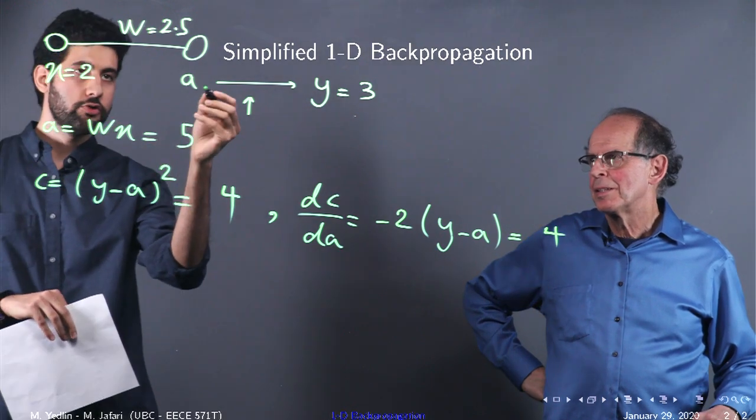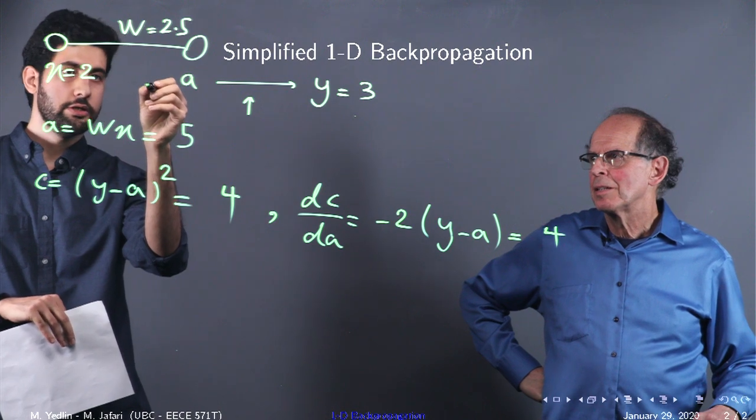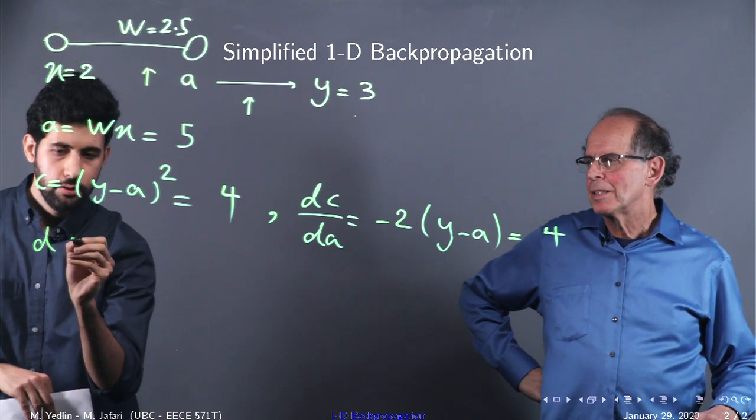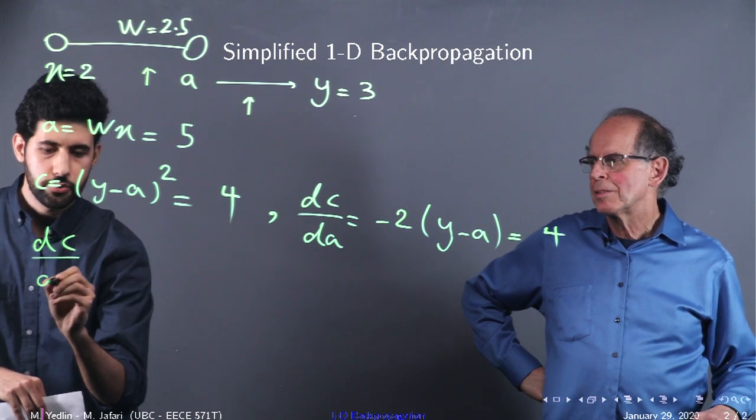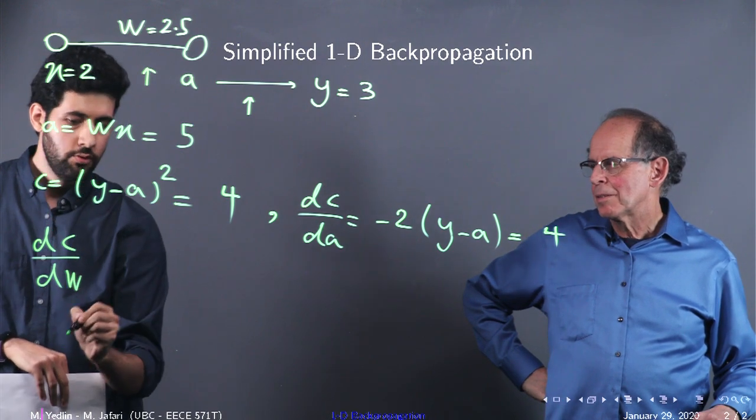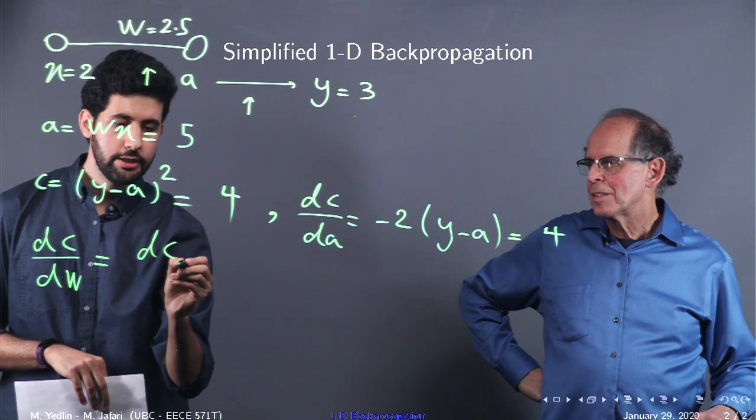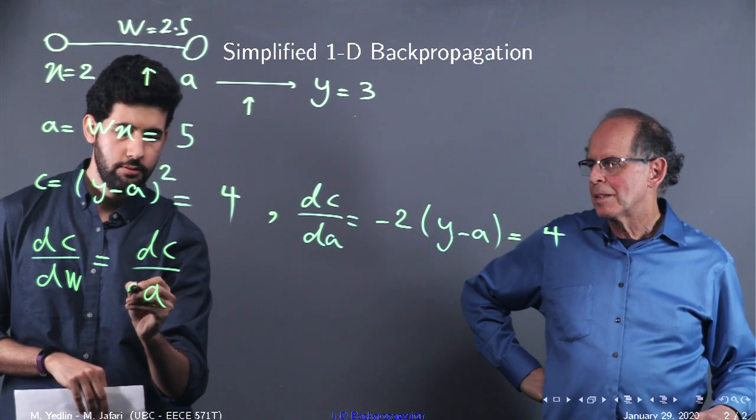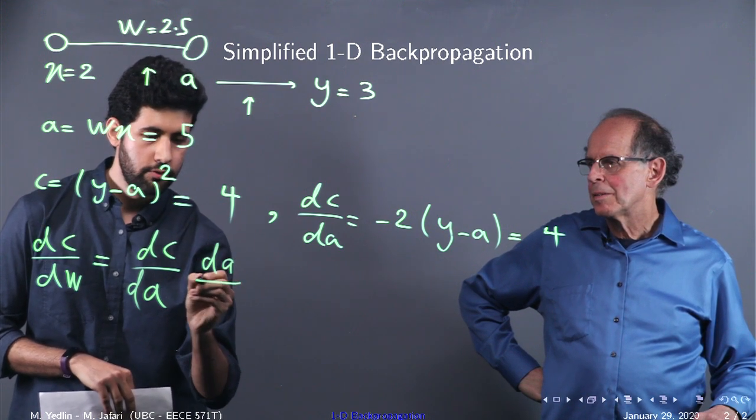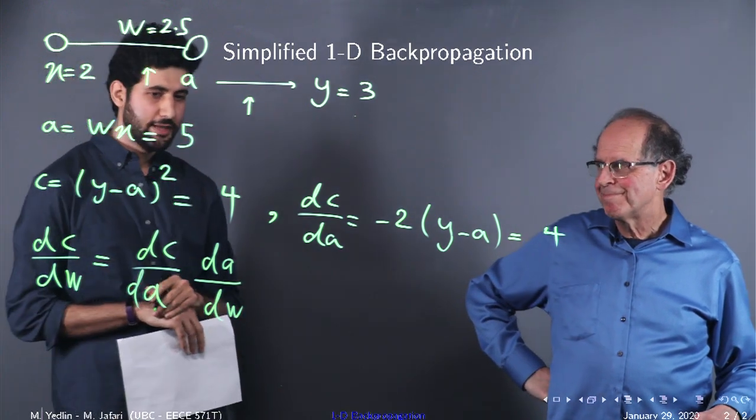Then we want to arrive probably at here, see how should we change W in order to change, change of C with respect to W. Right. Which would be change of C with respect to A, and then change of A with respect to W, the A. And that is the chain rule. And here it is.